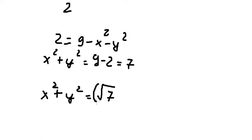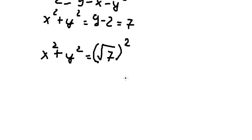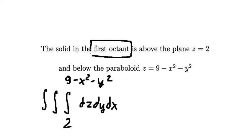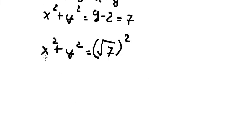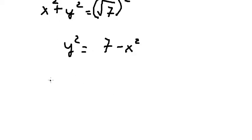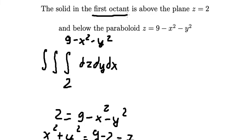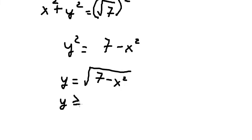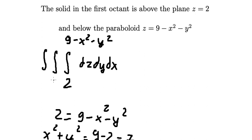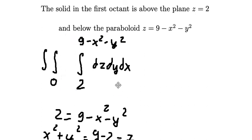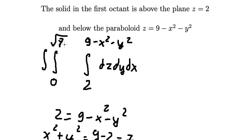The circle has radius square root of 7. Since we are in the first octant, y must be greater than or equal to 0, so y ranges from 0 to the square root of 7 minus x squared. For dy, the bounds are 0 to the square root of 7 minus x squared.